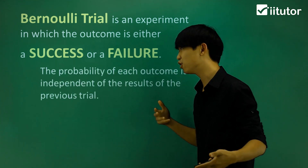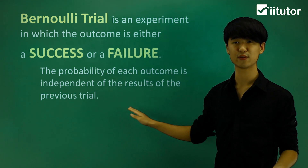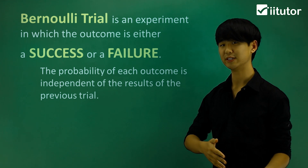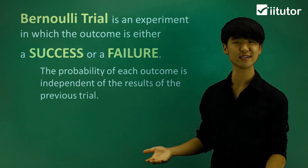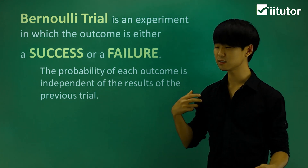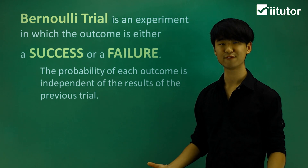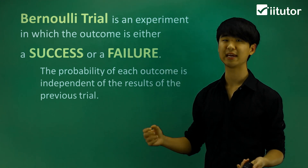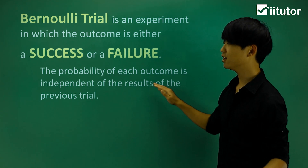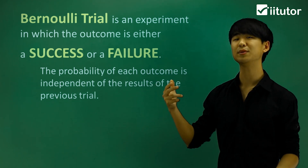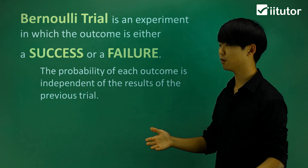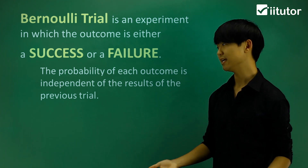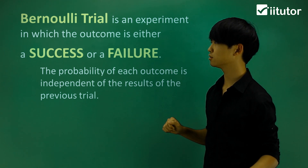Another condition of a Bernoulli trial is that the probability of each outcome is independent of the results of the previous trial. So if we go back to our coin example — if I flip it once, the probability of getting a head is going to be the same probability as if I flip it again and again. So the probability of each outcome is independent; it doesn't matter how many times I've done the event.